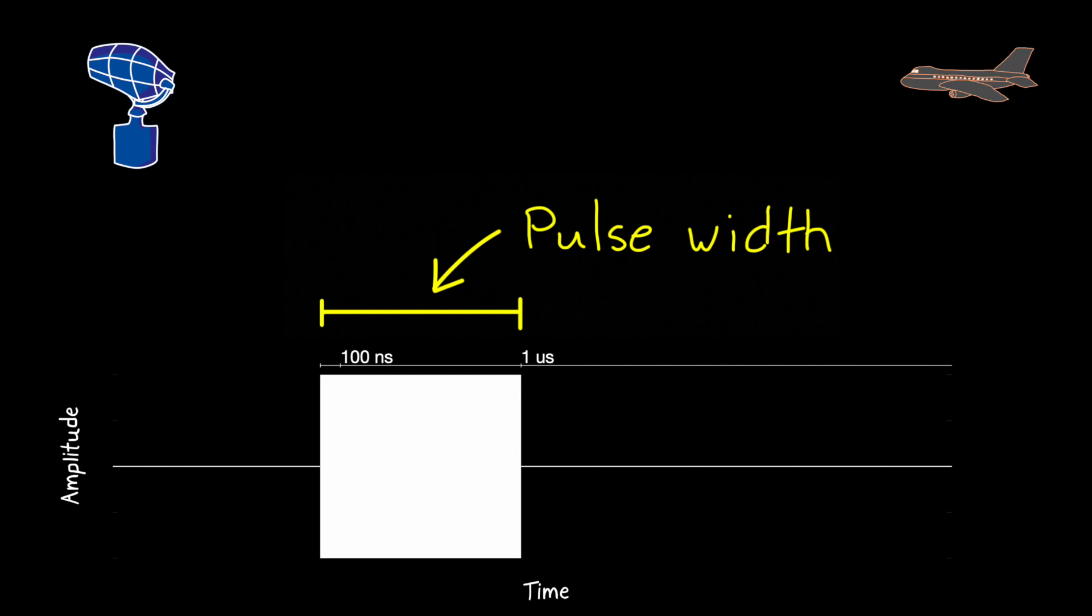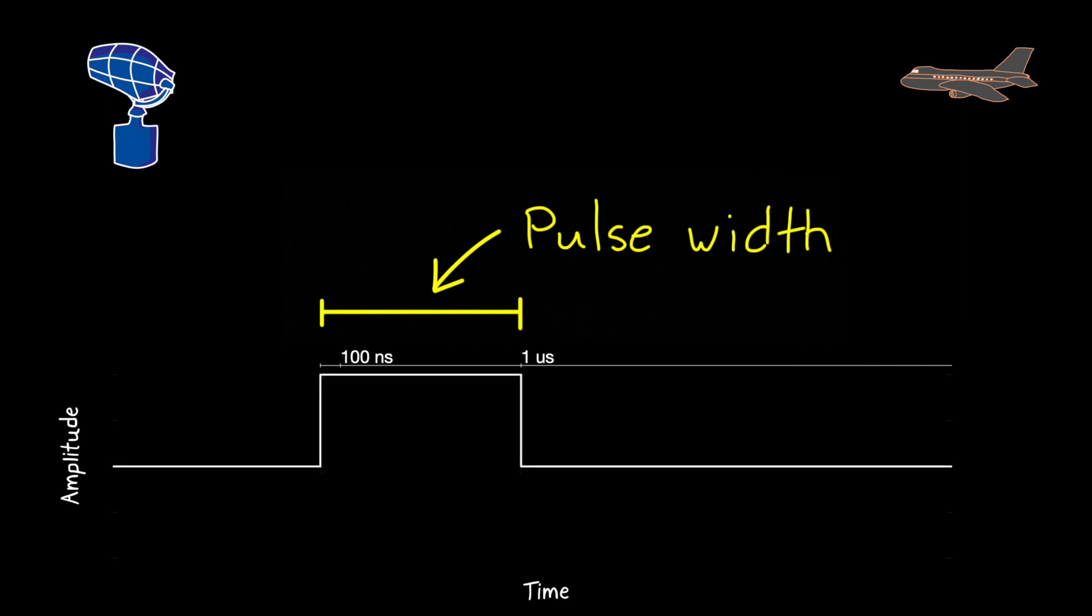Instead of showing the signal itself, I'll just represent the pulse as an outline of the amplitude of the signal. This fixed frequency scheme is called a rectangular pulse, since the amplitude of the signal forms this rectangle as the pulse is turned on and off.